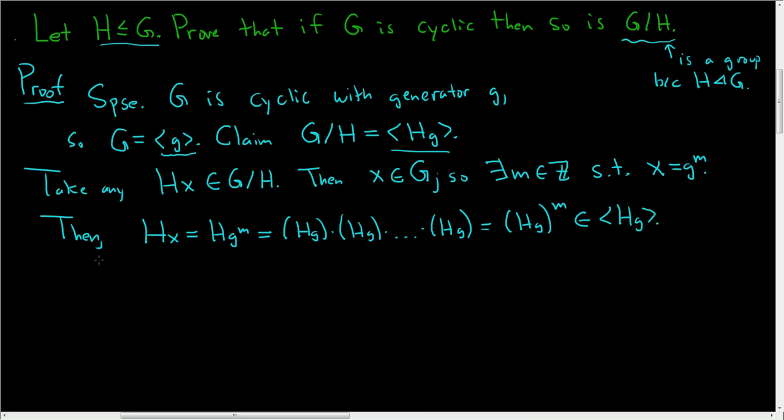We showed that any element in the quotient group is in ⟨Hg⟩. So G/H ⊆ ⟨Hg⟩. The other inclusion is obvious, so G/H = ⟨Hg⟩. Therefore, G/H is cyclic.